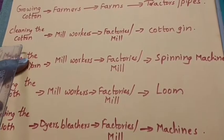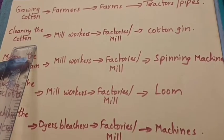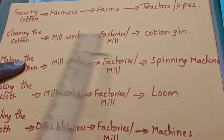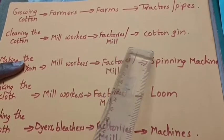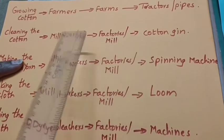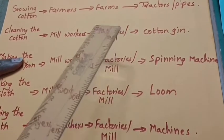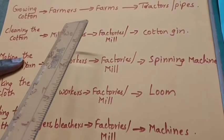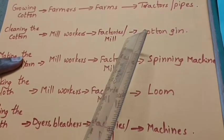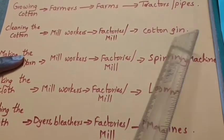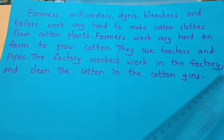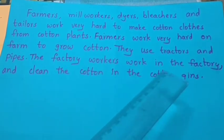Now the second detail is cleaning the cotton. After growing cotton, the mill workers clean the cotton. The place is factories or mill, and the tool is the cotton gin. So the sentence is: The factory workers work in the factory, and clean the cotton in the cotton gins.